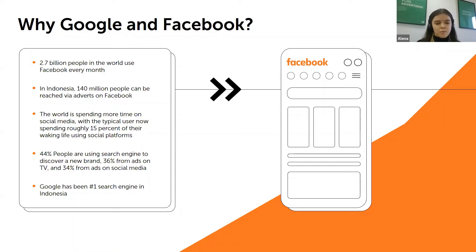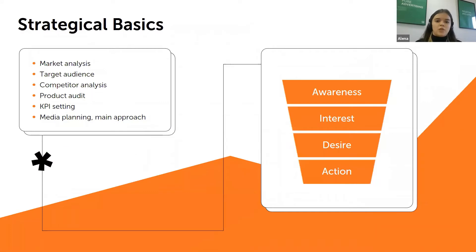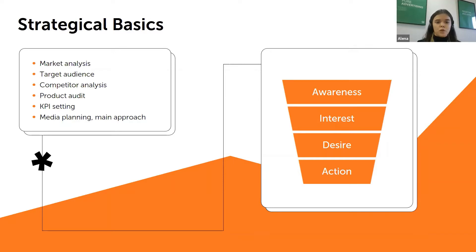Facebook and Google have built their ecosystems around their products, allowing them to collect data and give it to us at the targeting level. This, combined with the massive number of people using their products, makes them the most effective ad placements. The preparation before launching is very important. Of course you can simply launch a campaign on Instagram and wait for something to happen, but you may waste a lot of money and won't get helpful insights.